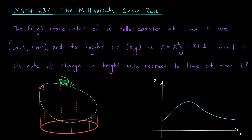Here we have a roller coaster moving along a track. As time passes, the coaster's x and y coordinates change. Maybe at time t equals zero, the coaster is above this point in the xy plane; maybe at time t equals one, the coaster is above this point, and so on. In this example, the coaster's xy coordinates are cos(t), sin(t) at time t. The coaster also has a z component — a height. We're told that when the coaster is directly above the point xy, its height is given by z equals x squared y plus x plus one.